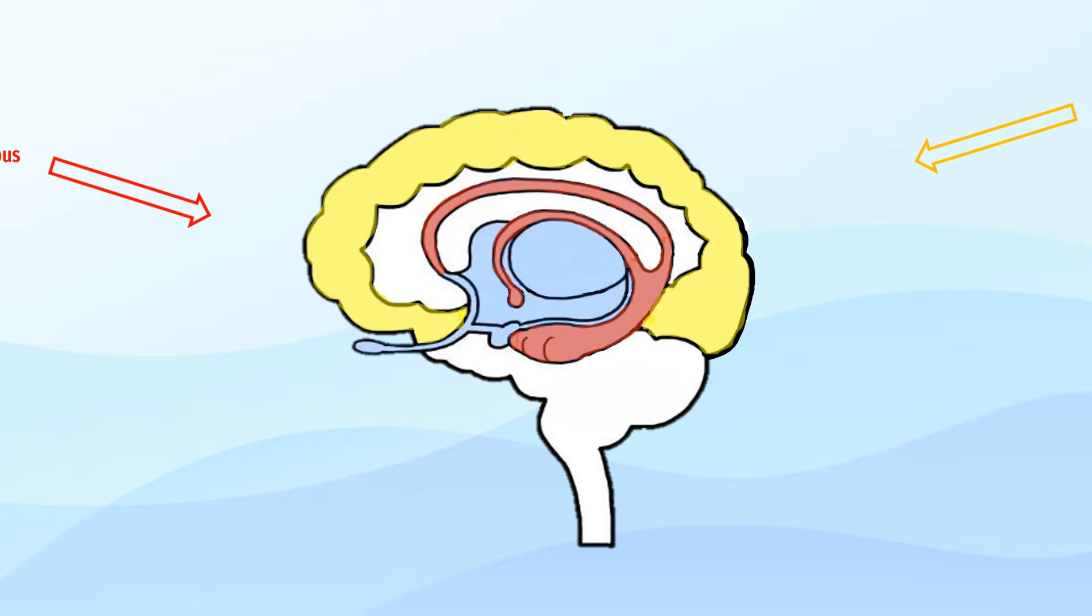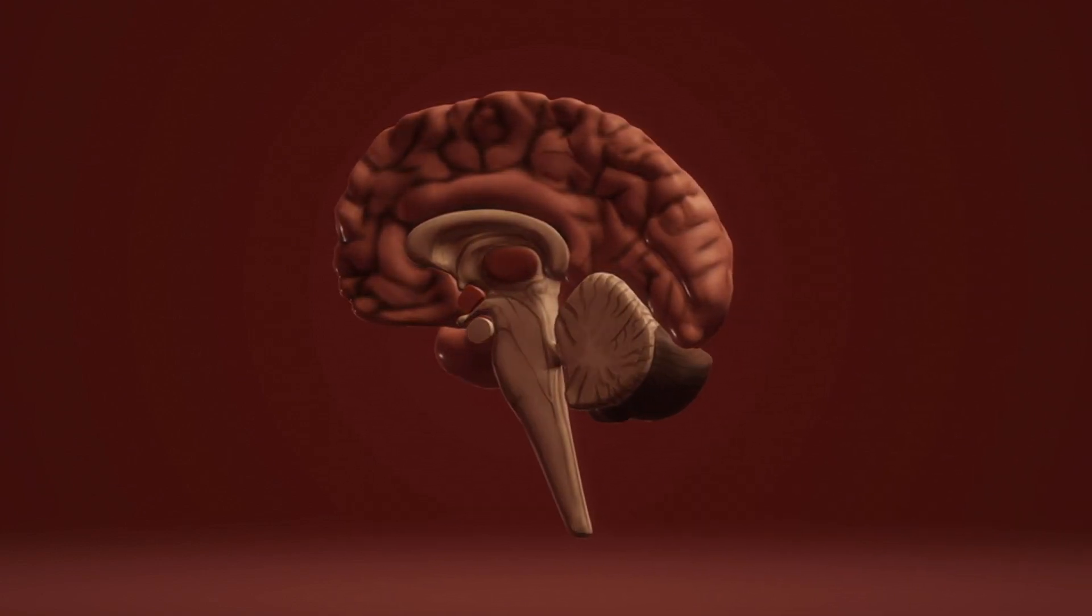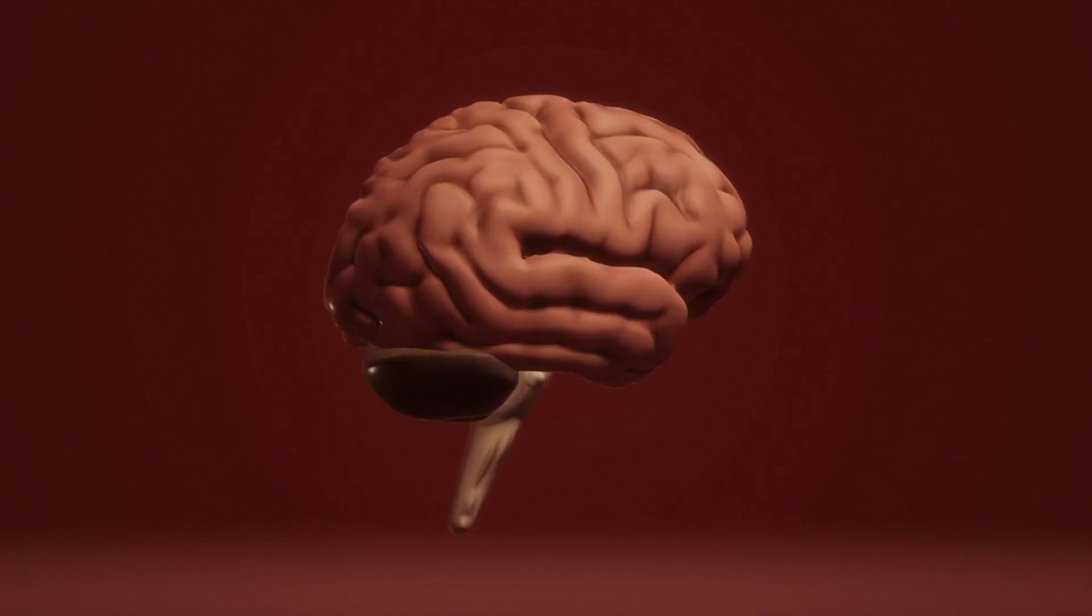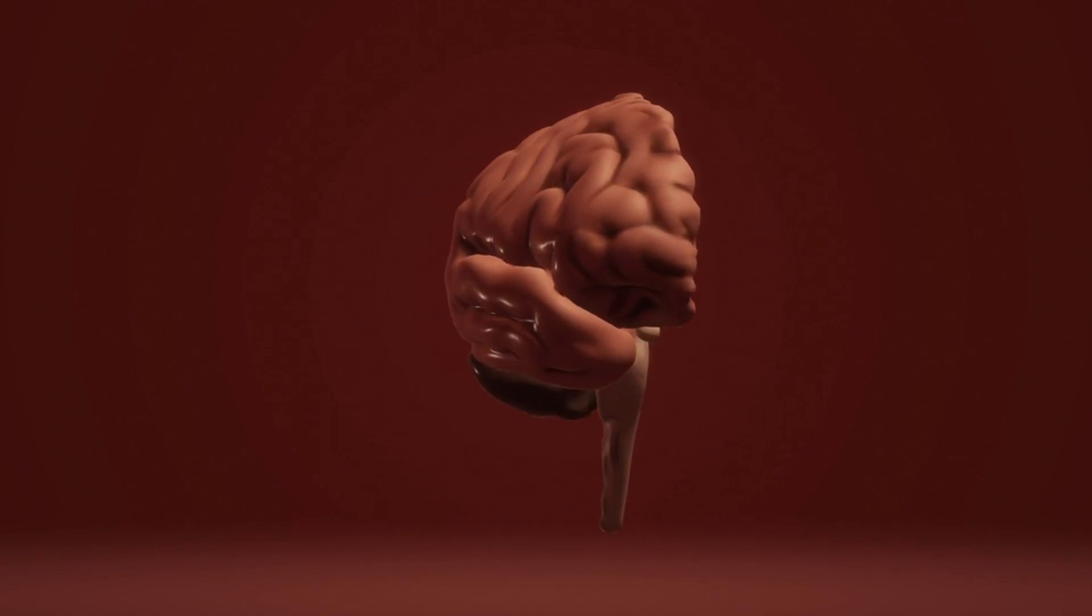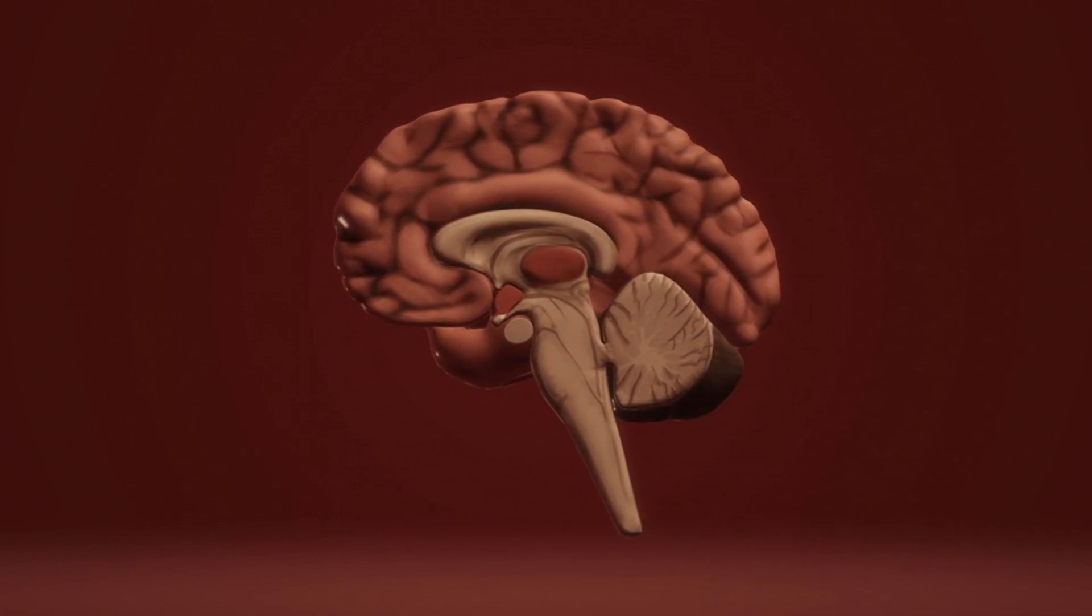Deep within the intricate folds of the brain lies the hippocampus, a vital component of the limbic system responsible for learning and memory. The hippocampus plays a key role in long-term memory formation. For information to become a long-term memory, it must initially pass through the cerebral cortex, the outer layer of the brain, then undergo processing in the hippocampus.